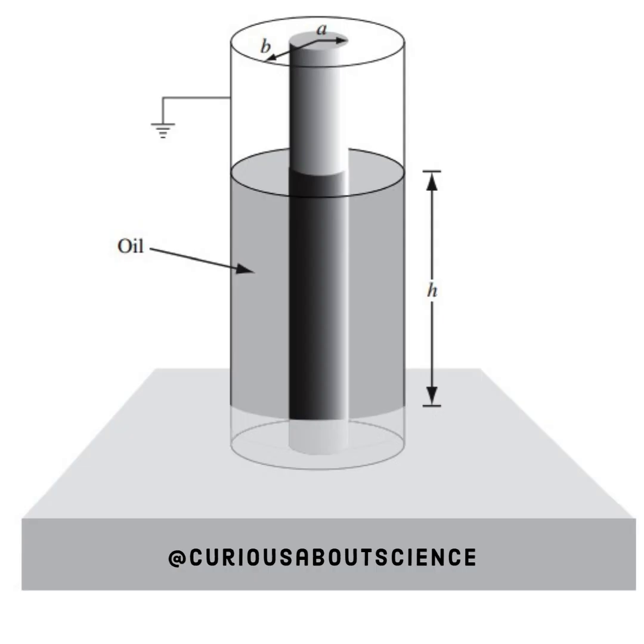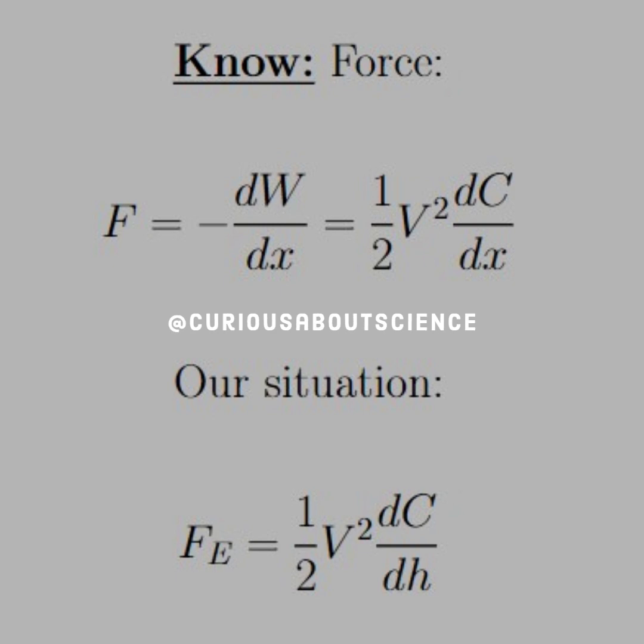Taking a look at our diagram, we see that we have the oil on the outside, inner radius a, outer radius b. B is grounded, A is at V, and we're curious at what height this will rise in the presence of an electric field. Things to know: